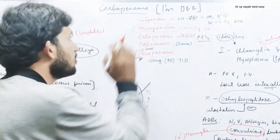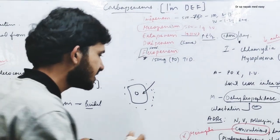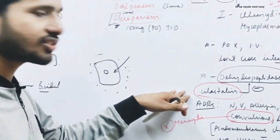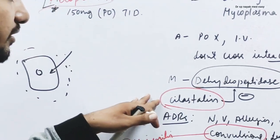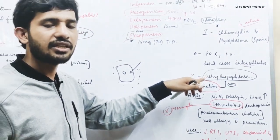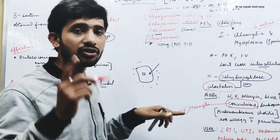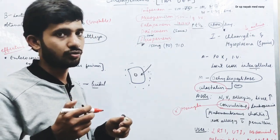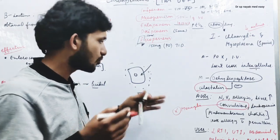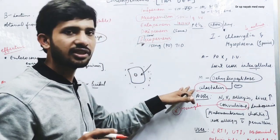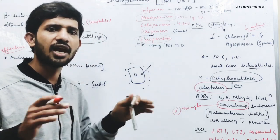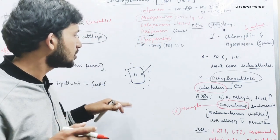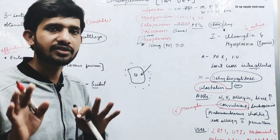Imipenem is always given in combination with cilastatin. Cilastatin inhibits the dehydropeptidase enzyme present in the kidneys, thereby increasing the concentration of imipenem in blood and urine, which increases its efficacy. Note that cilastatin itself has no antibacterial property. So we have covered imipenem's dose, kinetics, absorption, distribution, and excretion.